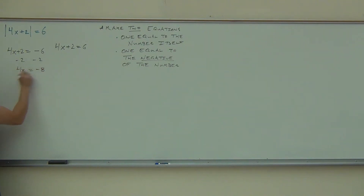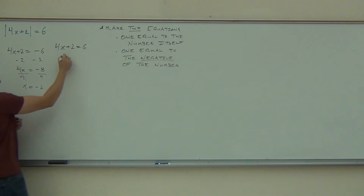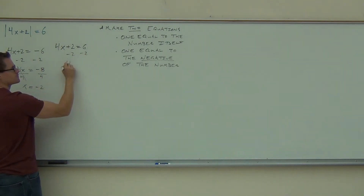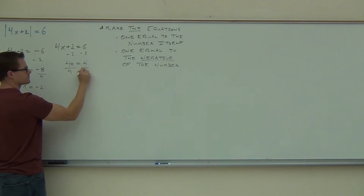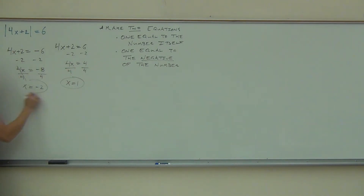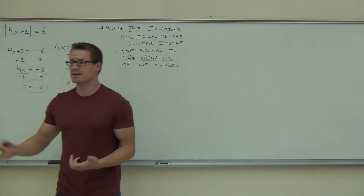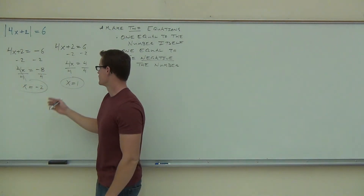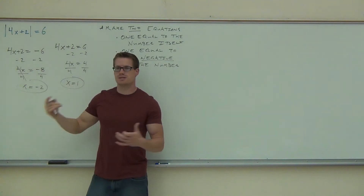The pretty nice part about this is we just go down and do what we normally do with our equations. We get our two solutions. We check them to make sure they both work. 4 times 1 is 4 plus 2, that gives us 6.